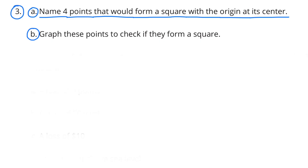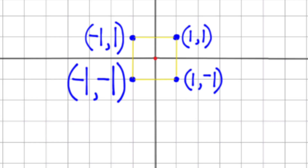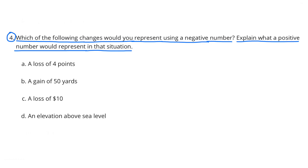Part b: graph these points to check if they form a square. I already graphed it — let's take one more look so we can see the square. It forms a square and you can see the origin inside the center. You can use your imagination to see how other points could also make a square.